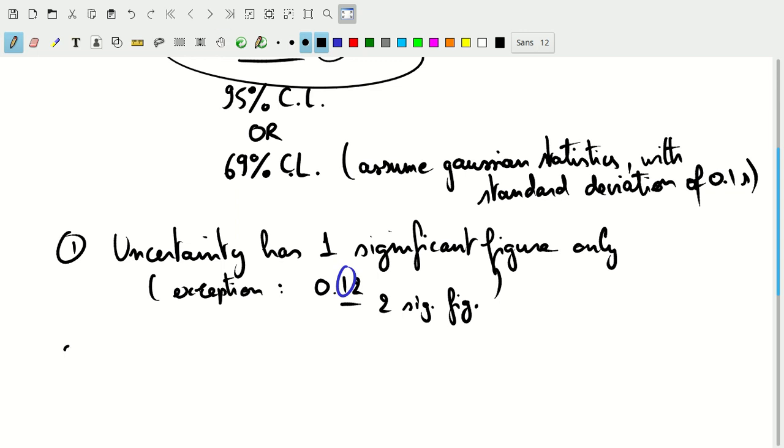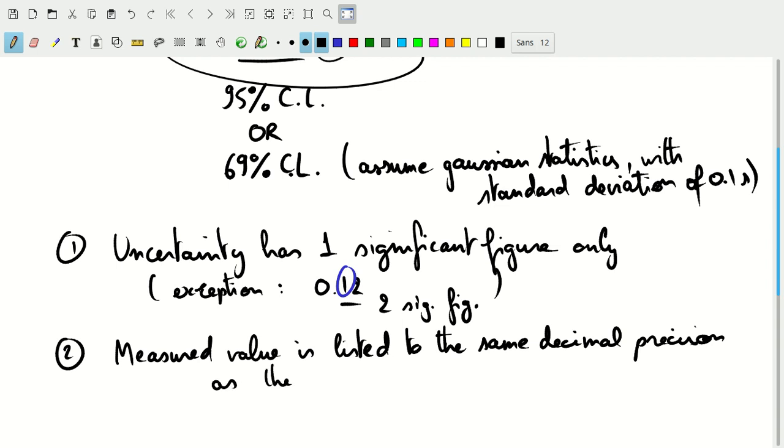The next rule is that our measured value is listed to the same decimal precision as the uncertainty.